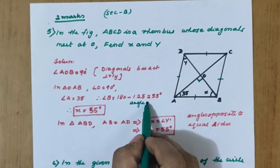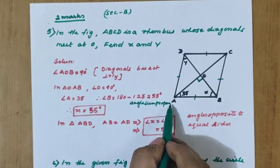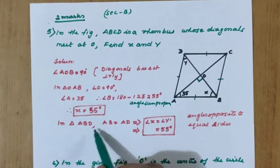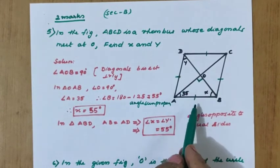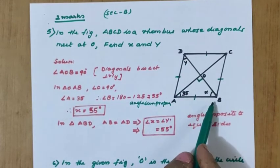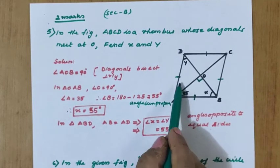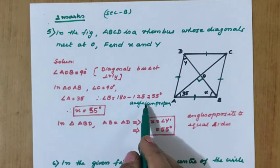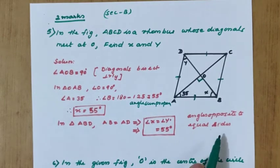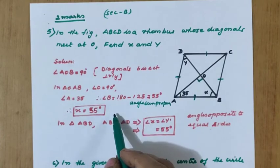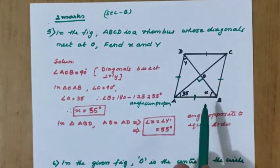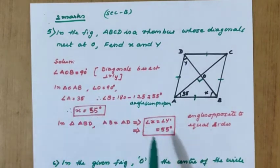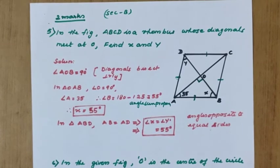The reason we write is angle sum property. For the two mark question, finding X is for one mark. Now for Y: in triangle ABD, side AB equal to AD because it is a rhombus. So ABD — these two sides are equal, and the angles opposite to these sides are also equal, meaning angle X equal to angle Y. Angle X is already calculated as 55 degrees, therefore Y equal to 55 degrees. Write the reasons correctly and stepwise to get full marks. X and Y are equal to 55 degrees.